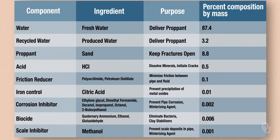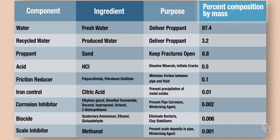The next table is information taken from FracFocus, a voluntary chemical registry maintained by the Groundwater Protection Council. It lists the chemicals and the amounts used on a particular frac job. The information was provided by an operator and lists the component, ingredient, purpose, and amount as a percent composition by mass for the total.